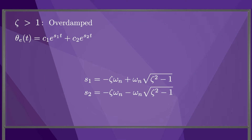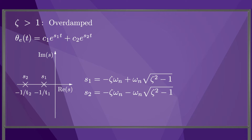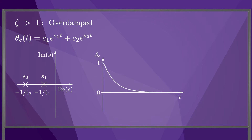For the overdamped case, the error response that solves the differential equation is the sum of two decaying exponentials, where the roots s1 and s2 are shown here. We can plot the roots in the complex plane defined by the real and imaginary axes. Since the error dynamics are stable, the roots have a negative real component and therefore lie in the left half plane. Since these roots are real numbers, they lie on the real axis. The time constants of the two corresponding decaying exponentials are the negative inverses of s1 and s2. We can plot the unit step error response by solving for c1 and c2 using the initial conditions theta e equal to 1 and theta e dot equal to 0. The sum of the two decaying exponentials tends to be dominated by the exponential corresponding to the less negative root. We call this the slow root, since its exponential decays more slowly.